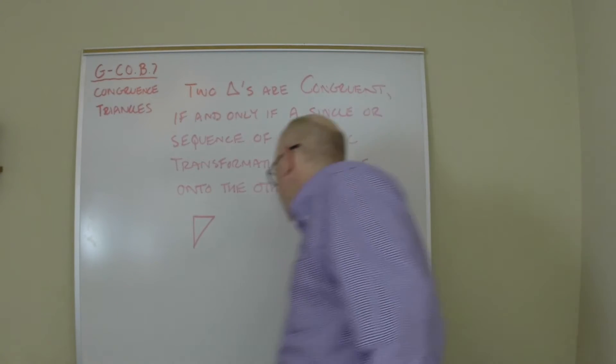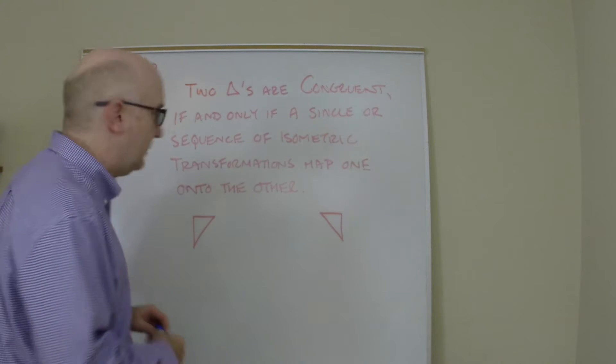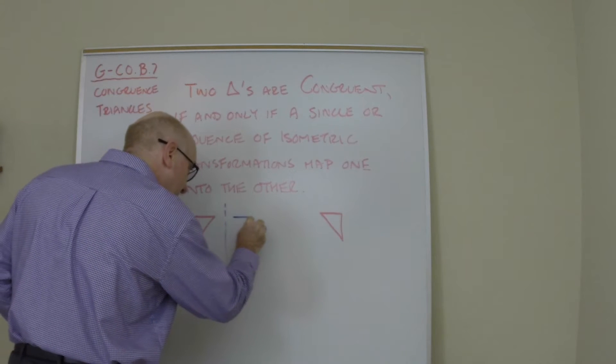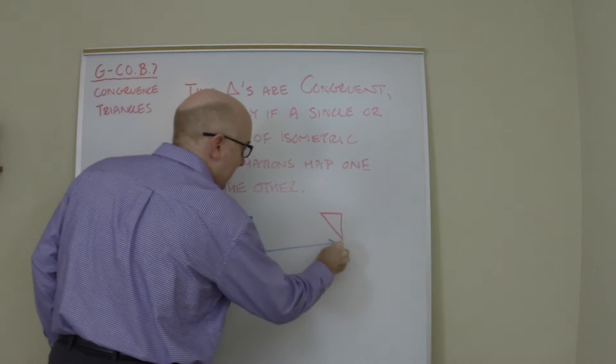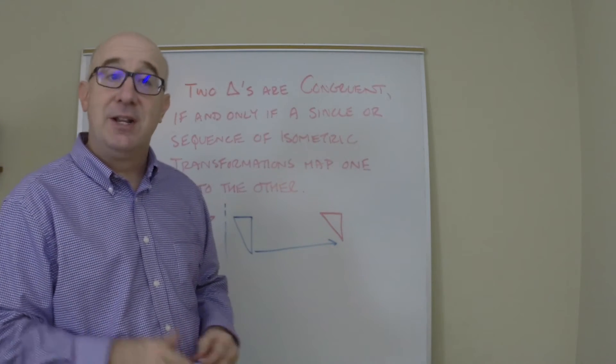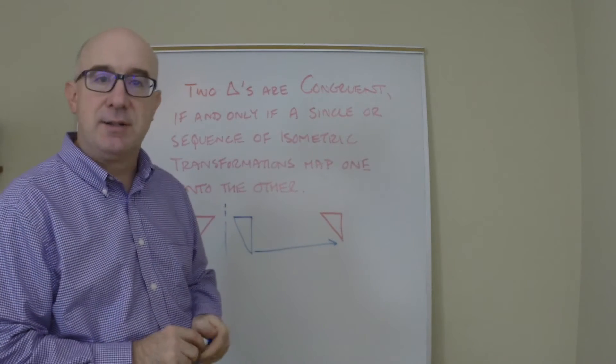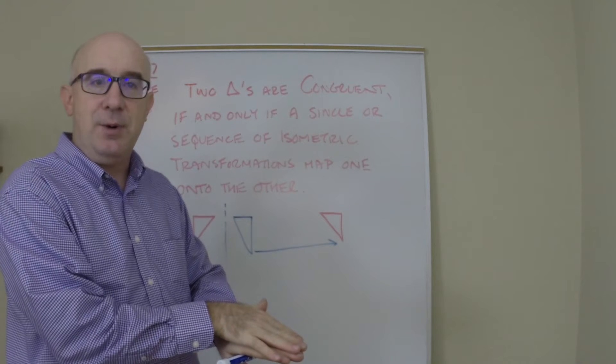So here are two triangles. If I wanted to establish that these were indeed congruent, I might perform a reflection first and then once I have that translated into position to land it on the other one. And if I could do that because a reflection and a translation are isometric and I placed it on top of the other one, I would have congruence.